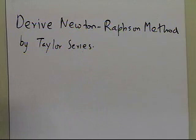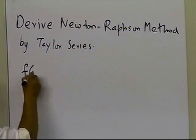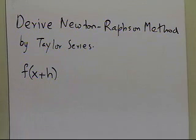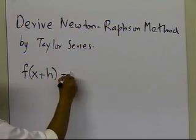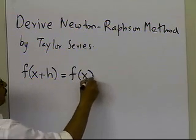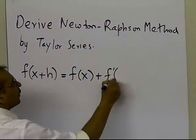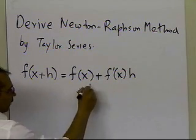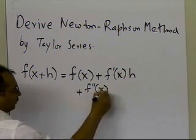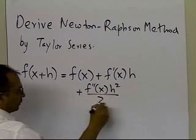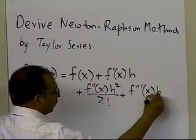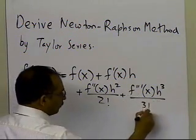Taylor series is about that we can give the value of the function at some other point, which is h away from the point where you are, if you can give the value of the function at that particular point, the value of the first derivative, the second derivative, the third derivative, and so on and so forth.